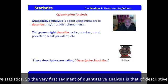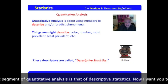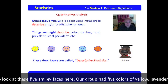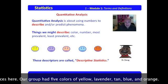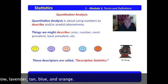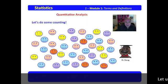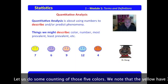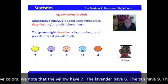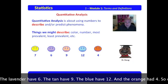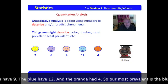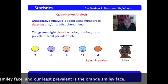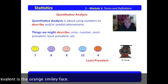The very first segment of quantitative analysis is descriptive statistics. Our group had five colors: yellow, lavender, tan, blue, and orange. Counting each: yellow have seven, lavender have six, tan have nine, blue have twelve, and orange had four. So our most prevalent is the blue smiley face, and our least prevalent is the orange smiley face.